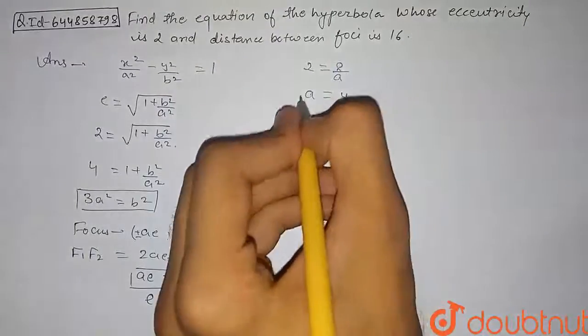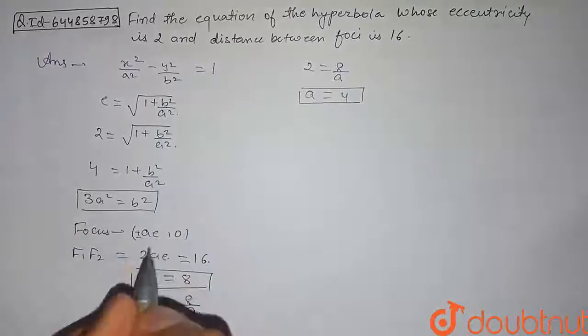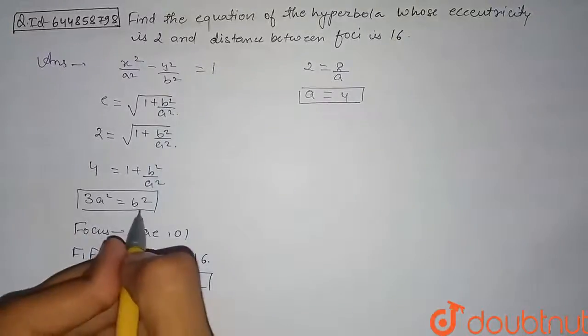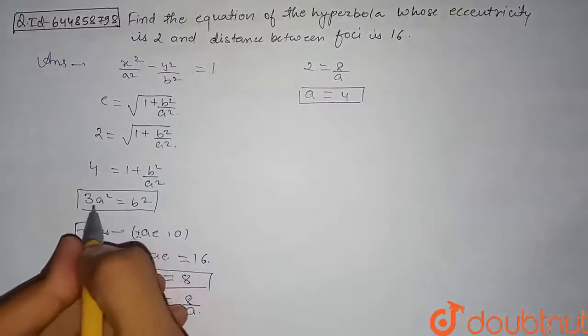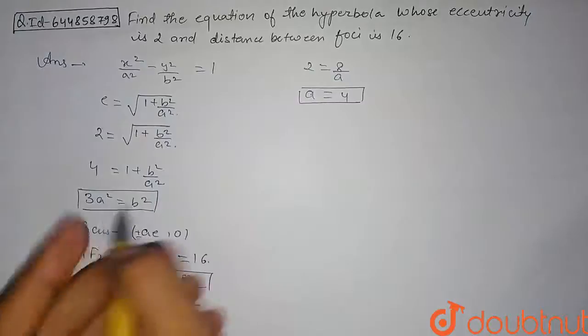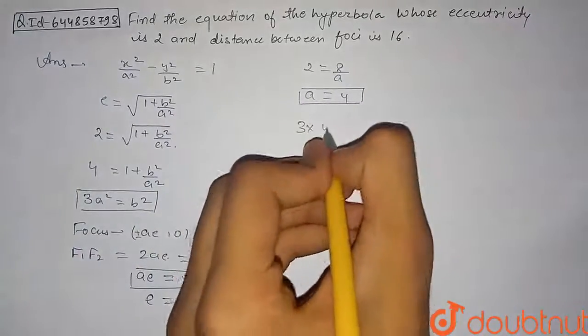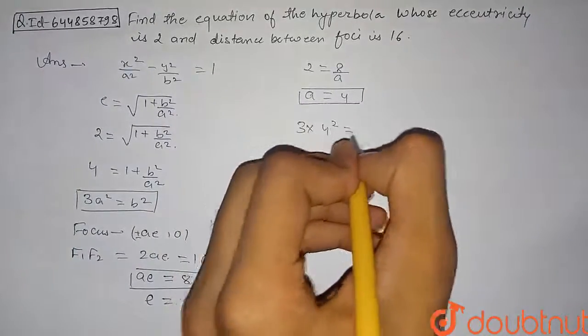From 2 = 8/a, our value of a comes out to be 8/2 = 4. So the value of a is 4. Now we will find the value of b.